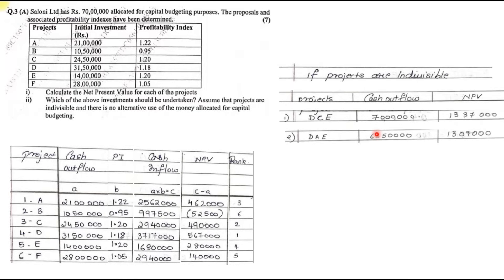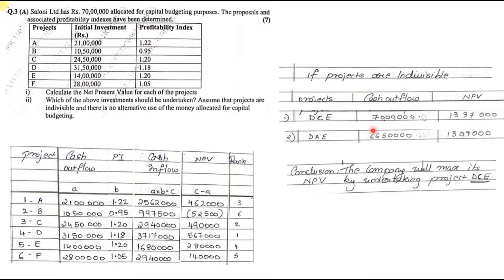Since combination D, C, E gives an outflow of exactly 70 lakhs (completely used) and an NPV of 30,37,000, no other combination will exceed this value — any other selection would either exceed 70 lakhs or yield a lower NPV. Therefore, in conclusion, the company will maximize its NPV by undertaking Projects D, C, and E.